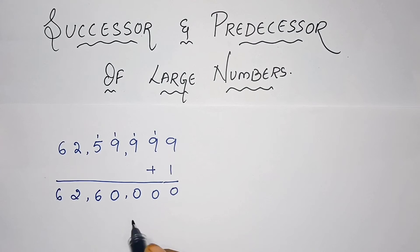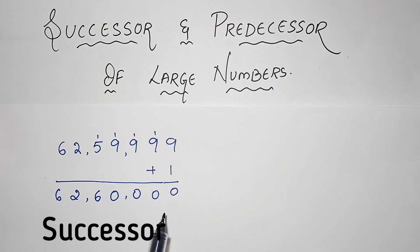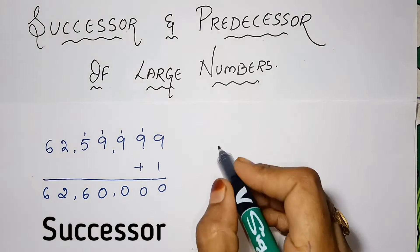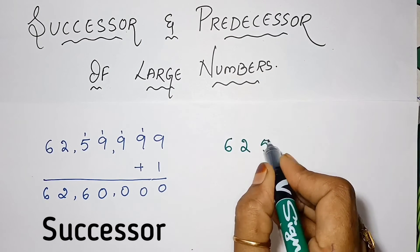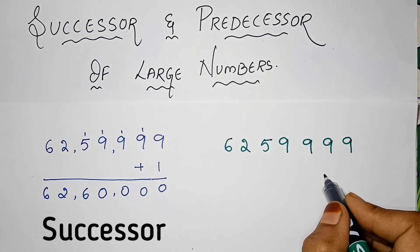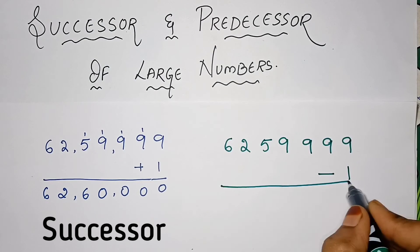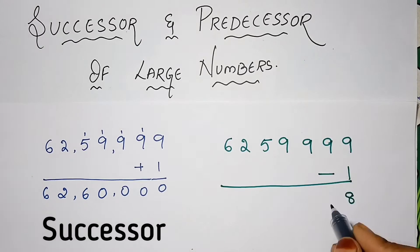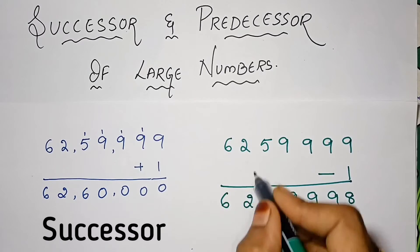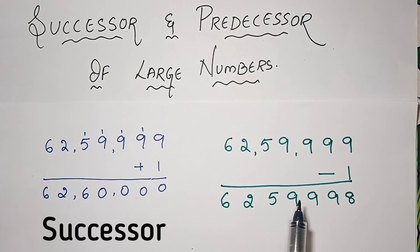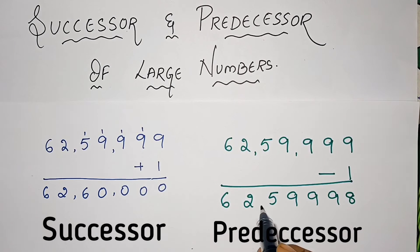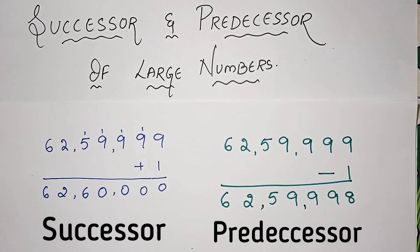So the successor of 62,59,9999 is 62,60,000. Now let us see the predecessor of this number: 62,59,9999. To find the predecessor, subtract 1. The predecessor of 62,59,999 is 62,59,998.